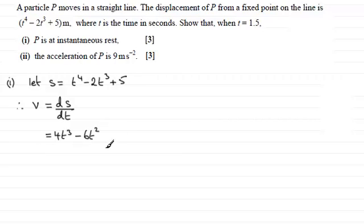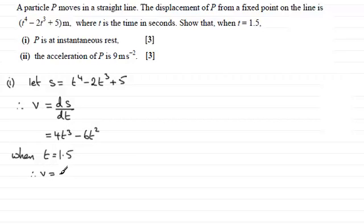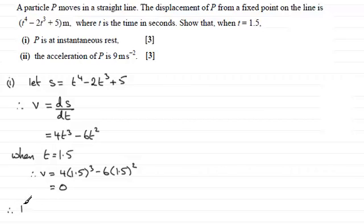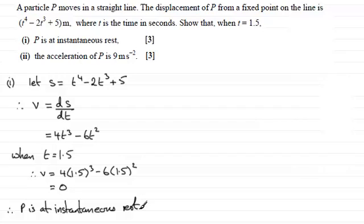Differentiating the constant just goes to 0. So all I need to do now is say that when t equals 1.5 seconds, v equals 4 times 1.5 all cubed minus 6 times 1.5 all squared, and if you work this out it comes to 0. So therefore p is at instantaneous rest.